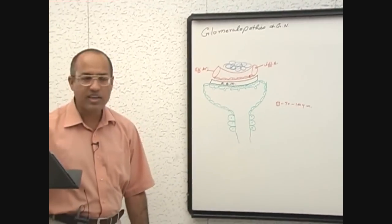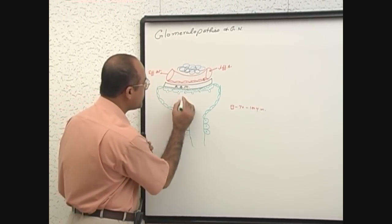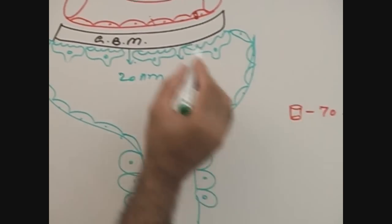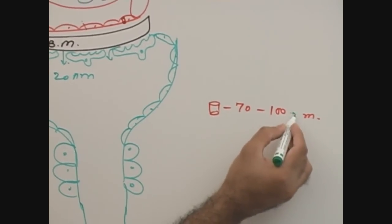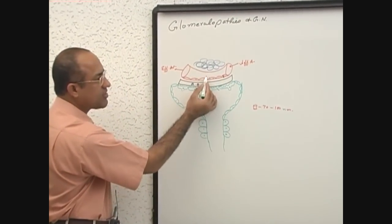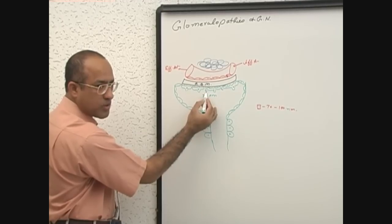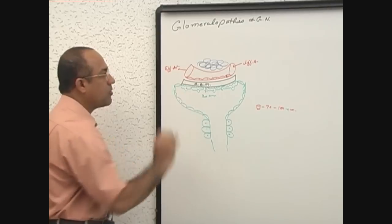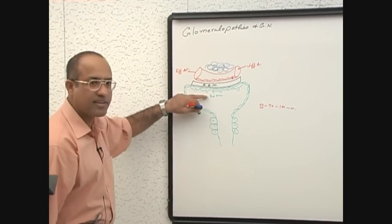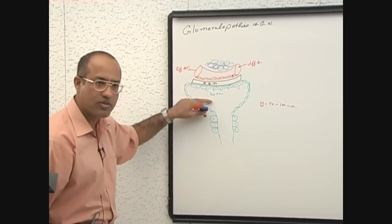Now, the size of the filtration slit is about 20 to 30 nanometer and this was on endothelial cell, this was 70 to 100 nanometer. Now, you know the barrier size here is size barrier 70 to 100 and here size barrier is 20. Now, another important point is that all the things which have to pass through that, they have to be small enough to pass through these barriers.